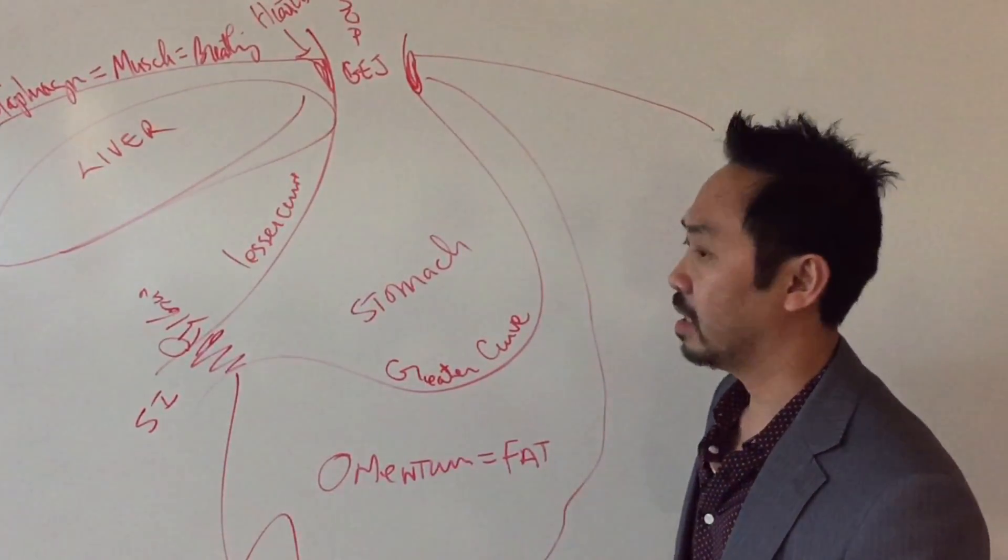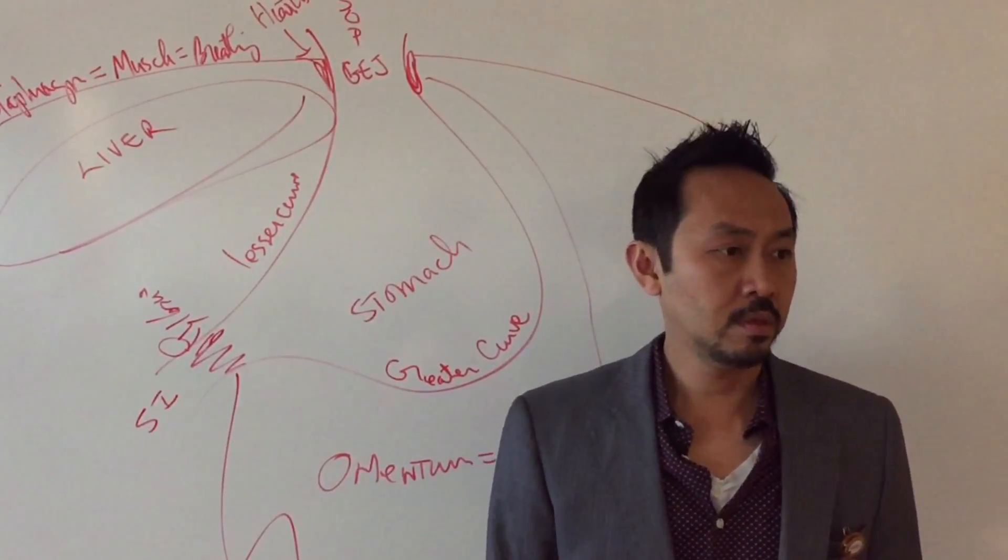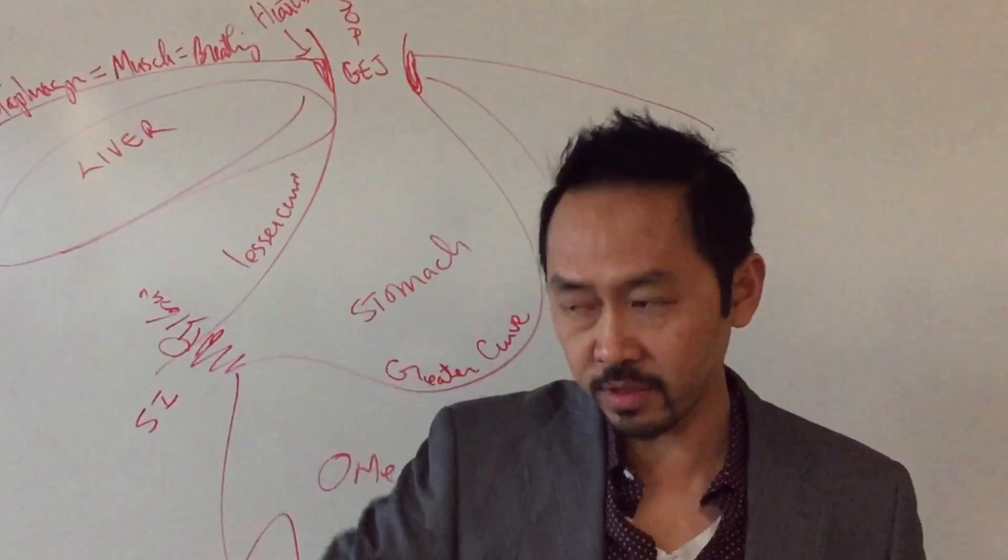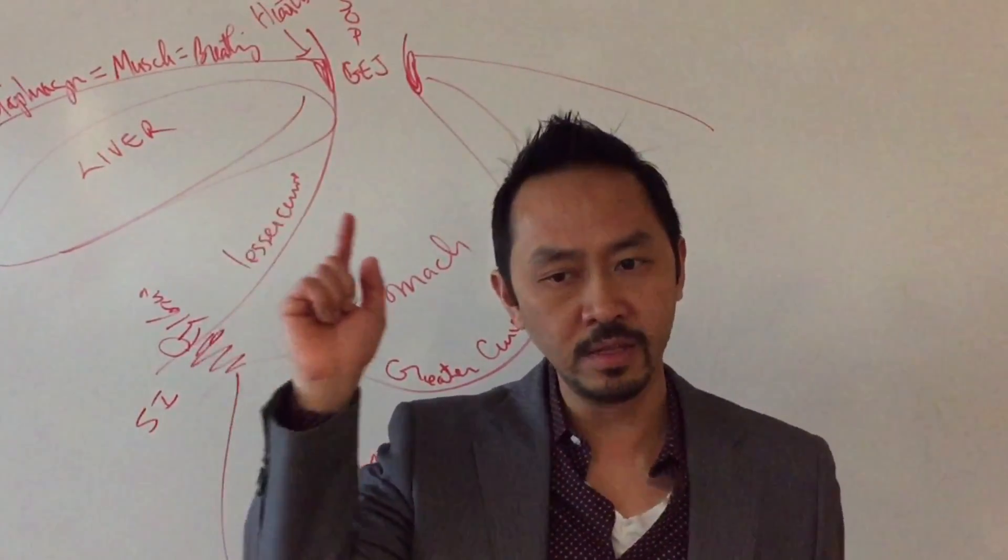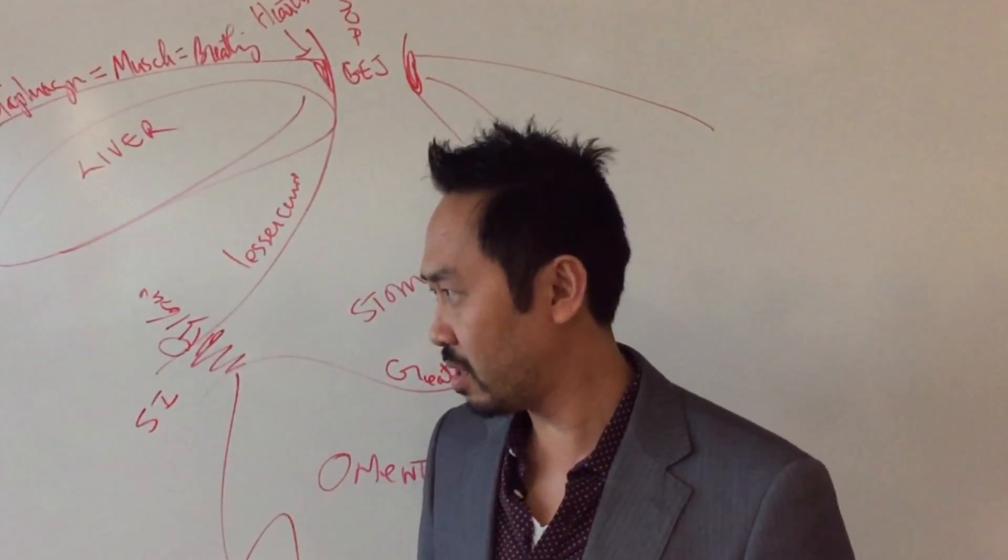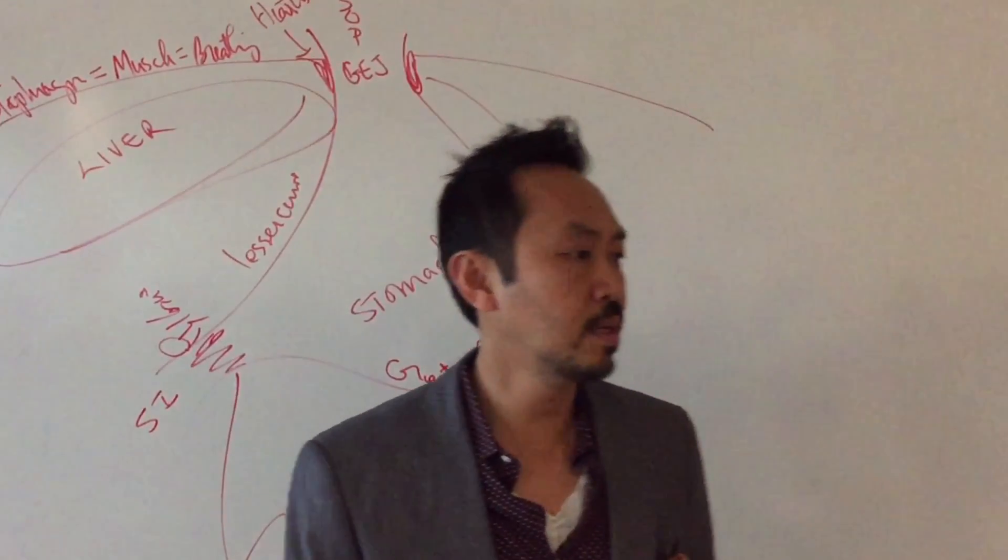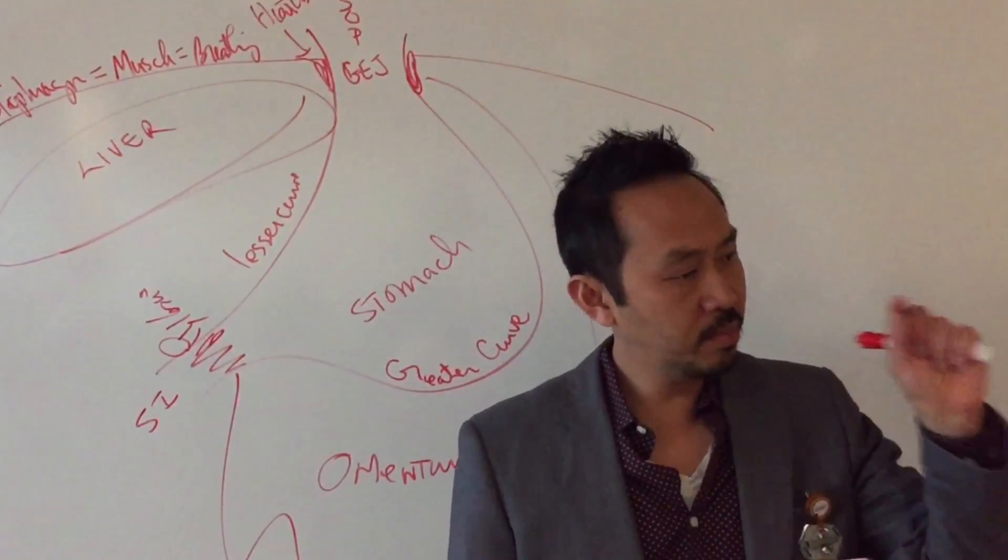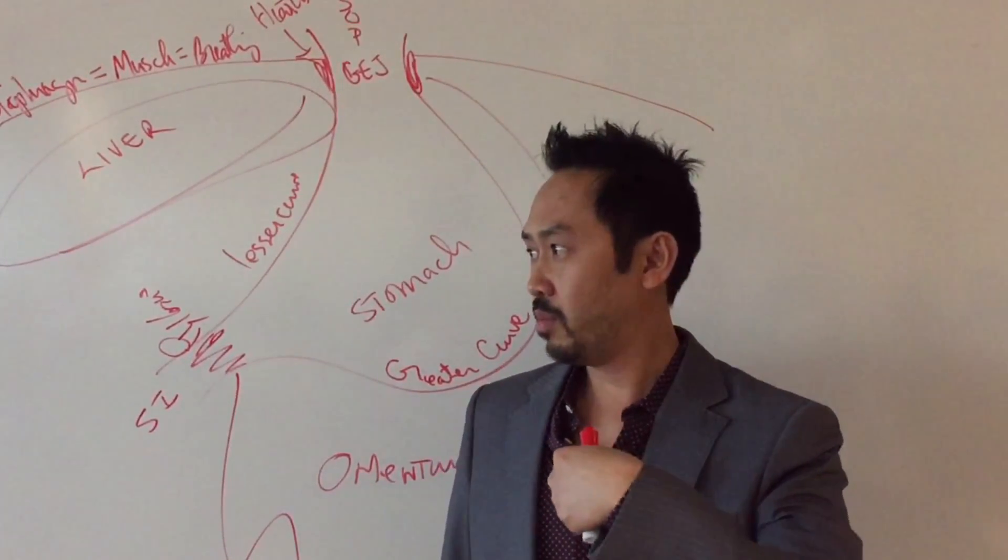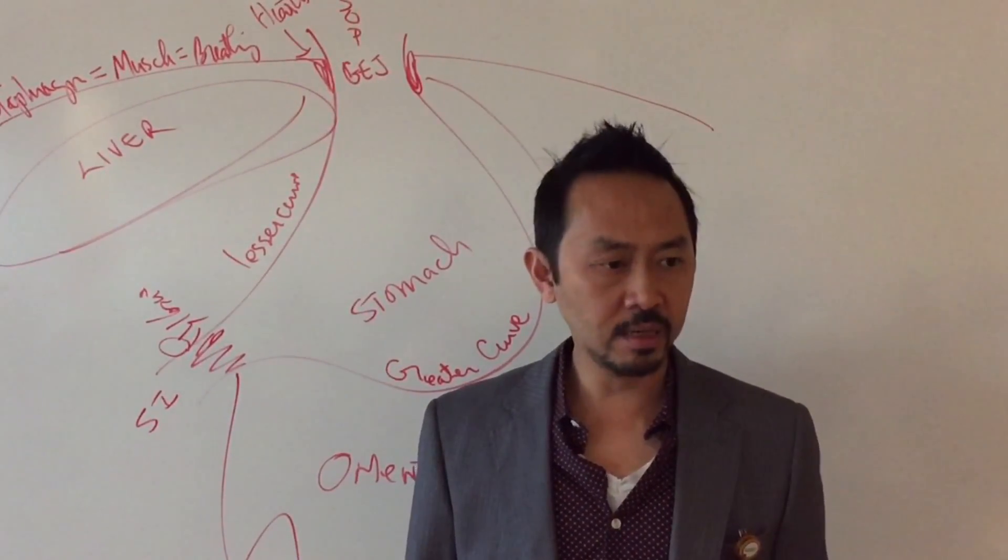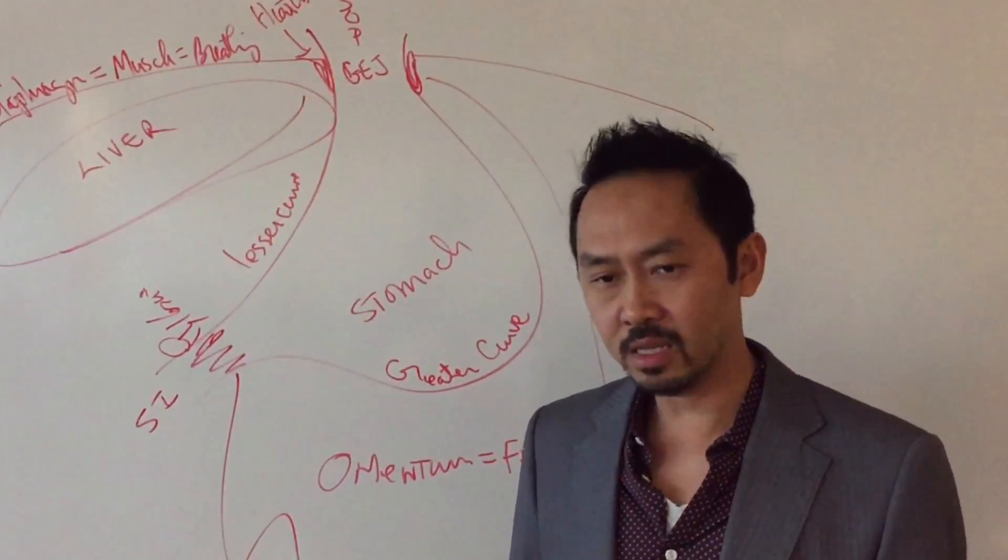Someone write this down for me. It's the fat on the inside that's killing you. You have fat inside your liver. You have fat around your heart. You have fat in this omentum that's suppressing your pancreas.